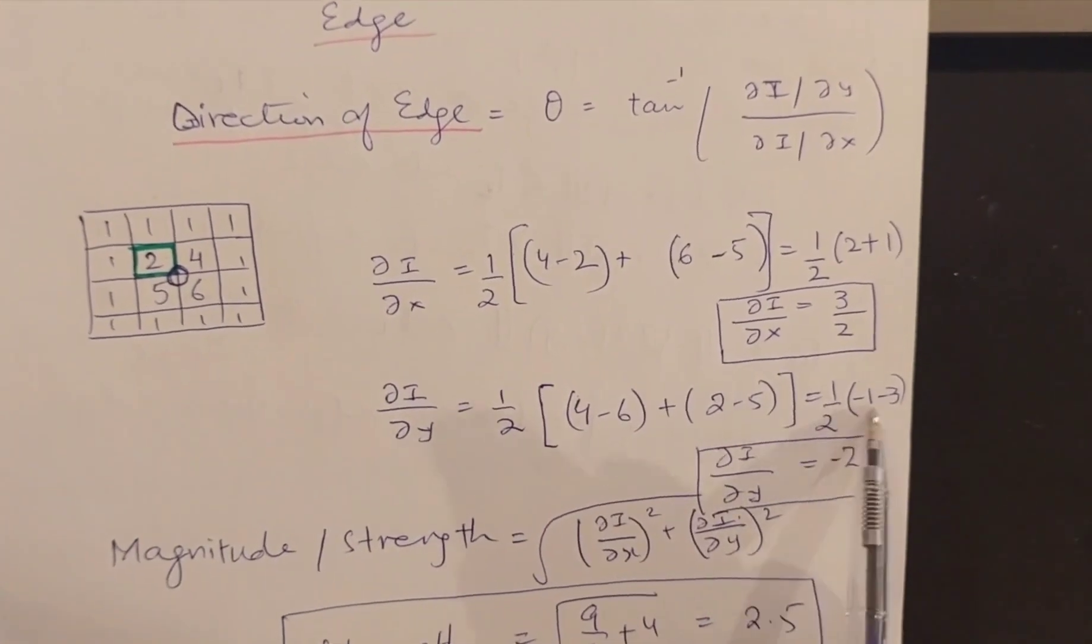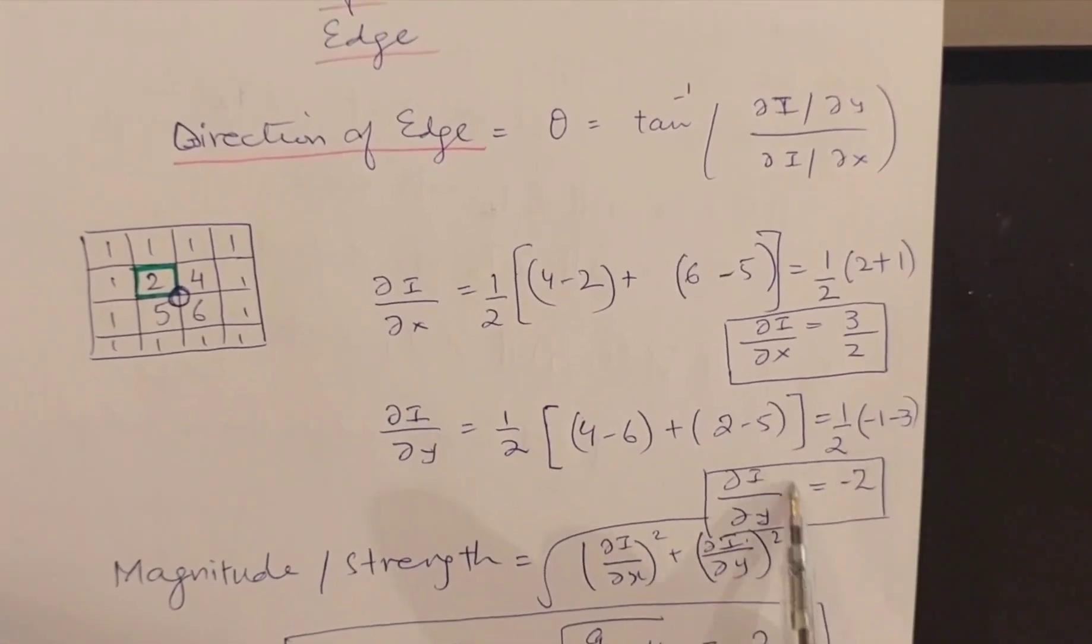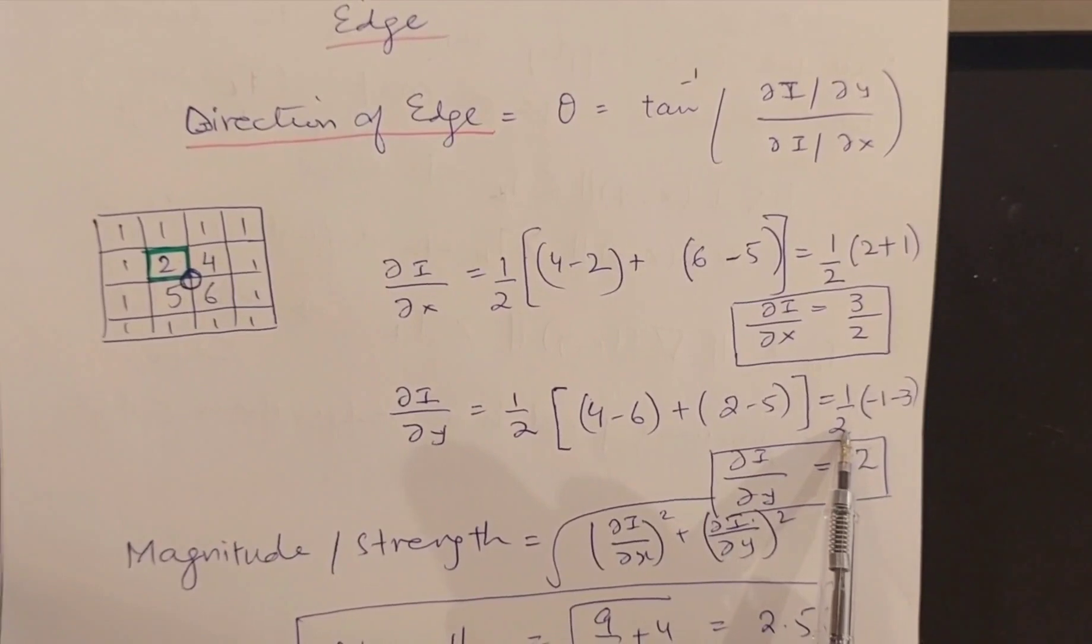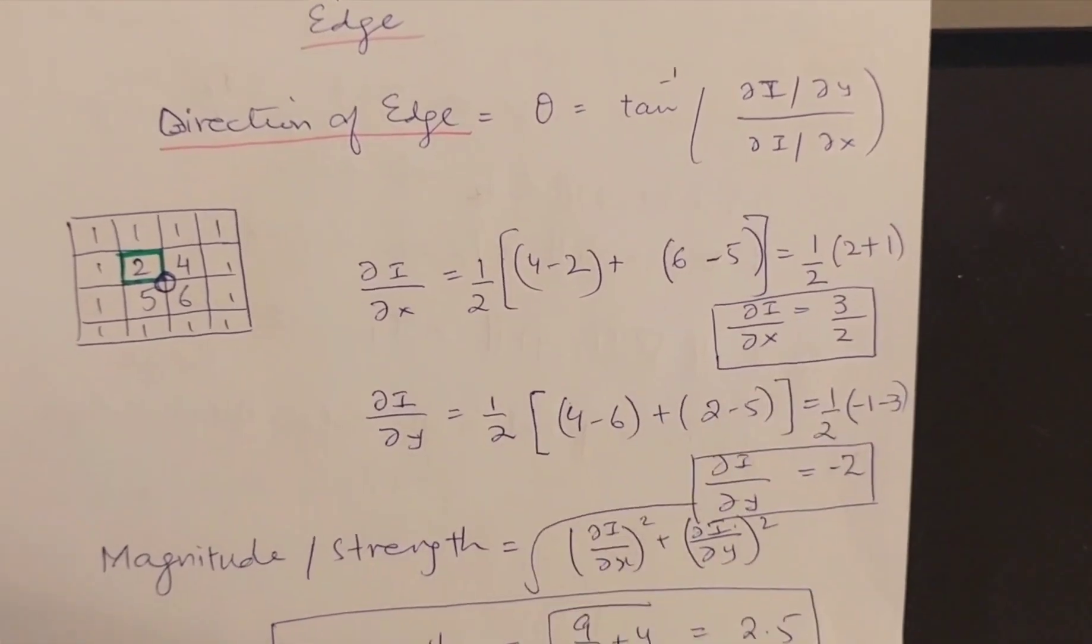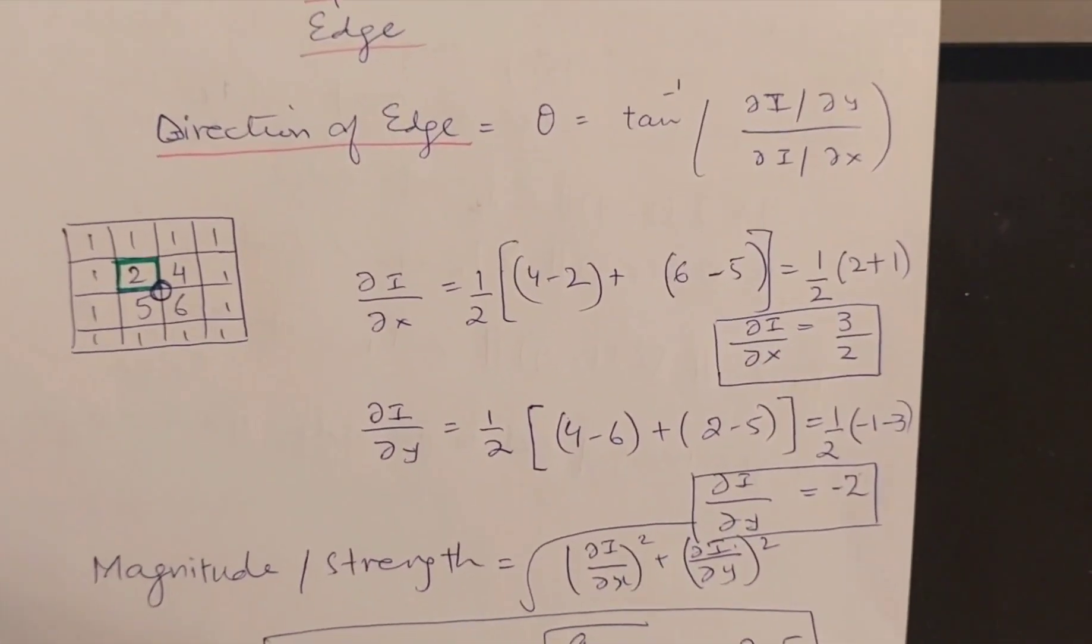So it is coming out to be minus 1 minus 3, and they add up into minus 4 divided by 2, which is minus 2. So this is my x component of the gradient and this is my y component of the gradient.